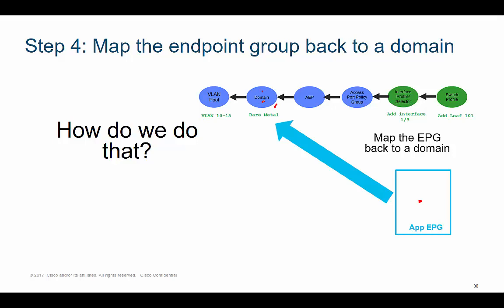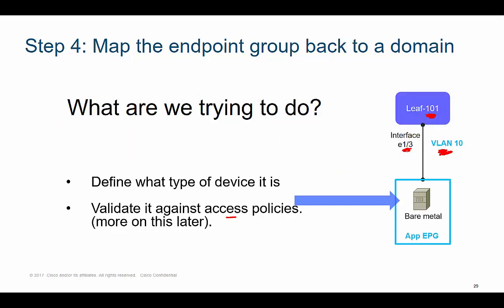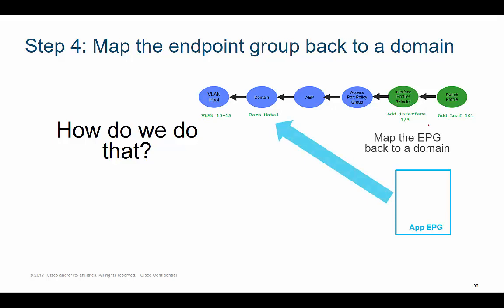The domain is like the connector — the meeting point. It connects your tenant config or EPG config back to your access policies. What we want to make sure is that what you configure here matches against your access policies. For example, the access policies may say VLAN 10 through 15 will be used for bare metal servers on interface 1/3, leaf 101. We'll talk more about this validation procedure and troubleshooting later.